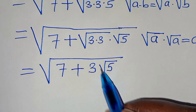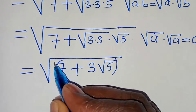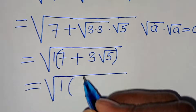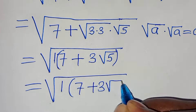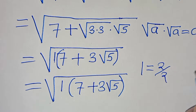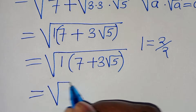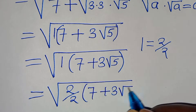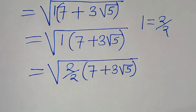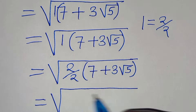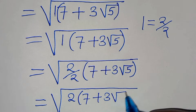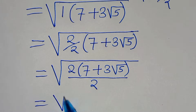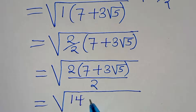The next step: for 7 plus 3 square root of 5, we note that 1 is common, so we can factor 1 out. This is the same thing as the square root of 1 times the quantity 7 plus 3 square root of 5, which equals the square root of 2 over 2 times the quantity 7 plus 3 square root of 5. This implies we have the square root of 2 times 7, which is 14, plus 2 times 3 square root of 5, all divided by 2.